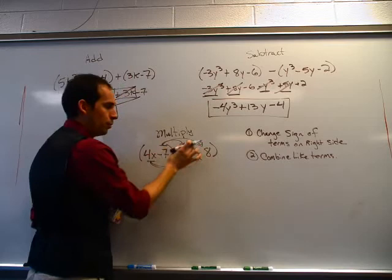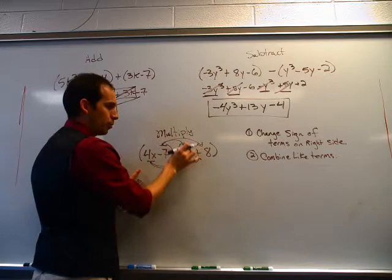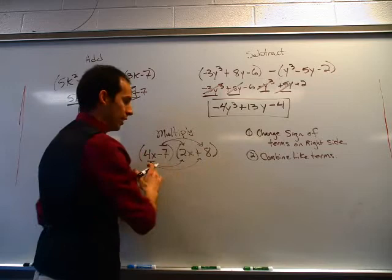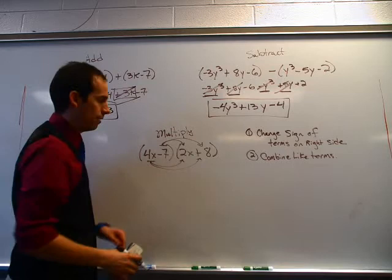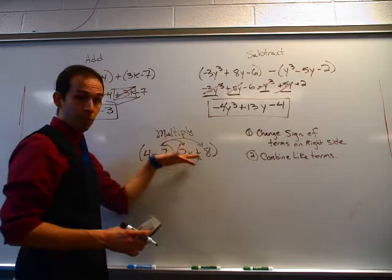Instead of distributing one number to both terms, I'm distributing two terms to both terms. So this term multiplies to these two, and this term also multiplies to these two. We're going to end up with four new terms. And when you combine like terms, generally speaking you're left with a trinomial — a three-part problem. So let me show you the box method.